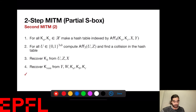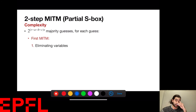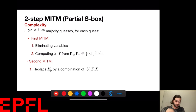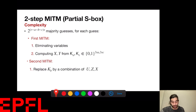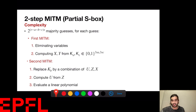This gives me the whole key. For complexity: there are majority guesses to perform, two MITM stages, Gaussian elimination to eliminate variables, matrix multiplications, and S-box evaluations. In both MITM stages I evaluate linear polynomials. The full complexity analysis is somewhat tedious but similar to the previous case — check the paper for full details. We also implemented the attacks.